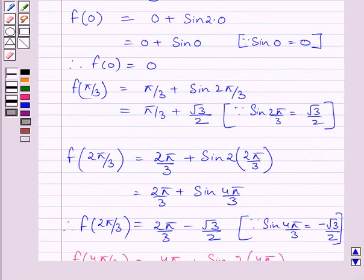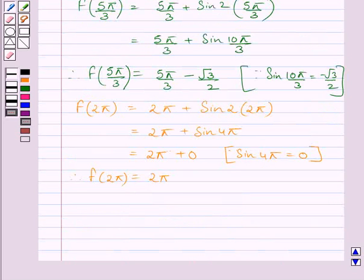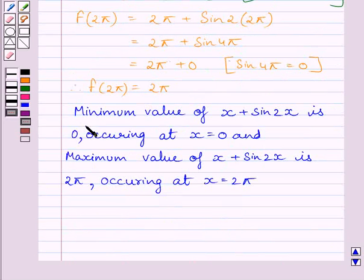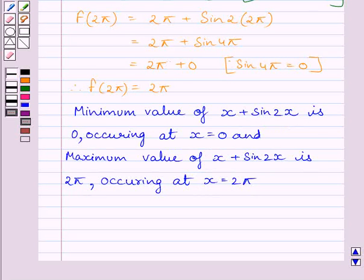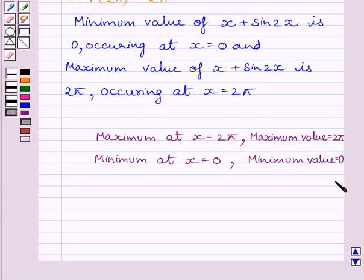Now we will identify the maximum and minimum values of function f. Clearly, the minimum value of f is 0, occurring at x = 0, and the maximum value of f is 2π, occurring at x = 2π. So the minimum value of x + sin 2x is 0 at x = 0, and the maximum value is 2π at x = 2π. This completes the session — hope you understood, take care and have a nice day.